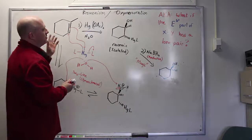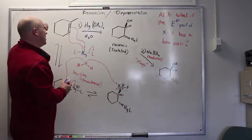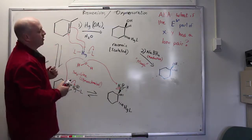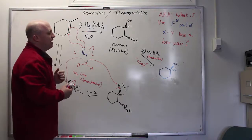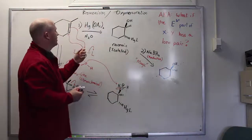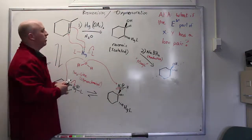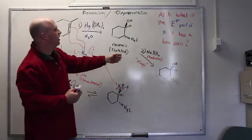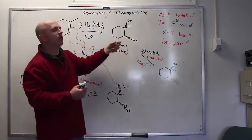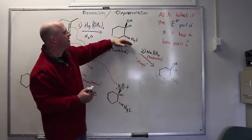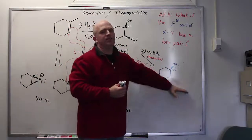Oxymercuration and reduction, two-step sequence. The result is that you end up adding water across the double bonds so that you have an alcohol. If the solvent is different, then you can make an ether, but what you're not going to do is usually isolate and use the mercury product. Step one makes it, step two removes the mercury, replaces it with a hydrogen.